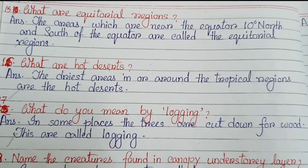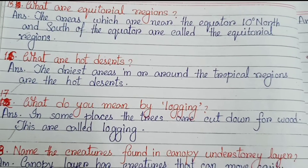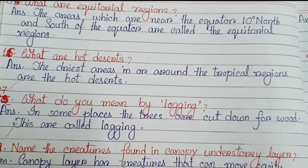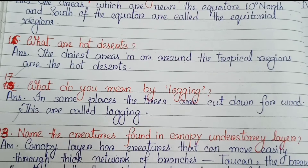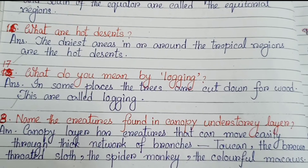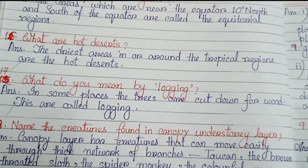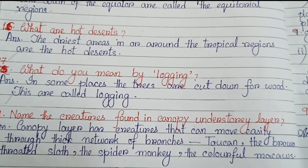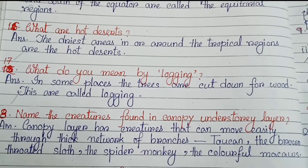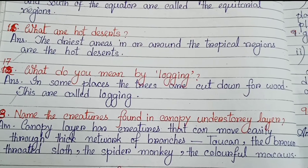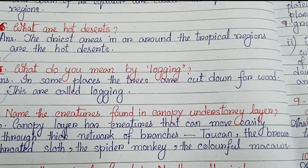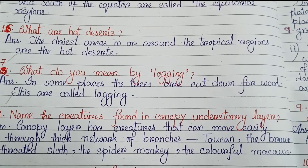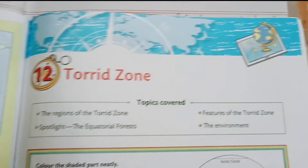Number 15: Which are equatorial regions? The areas near the equator, 10 degrees north and south, are called equatorial regions. Number 16: What are hot deserts? The driest areas in or around the tropical regions are hot deserts. Number 17: What do you mean by logging? In some places, trees are cut down for wood — this is called logging. Number 18: Name the creatures found in the canopy layer. The canopy layer has features that allow creatures to move through thick networks of branches — the toucan, brown-throated sloth, spider monkey, and colorful macaw.